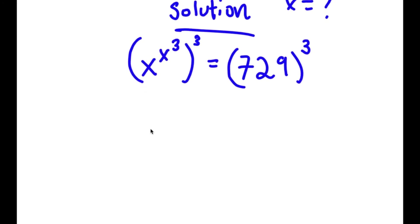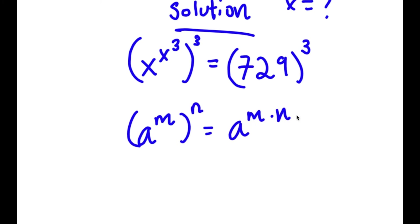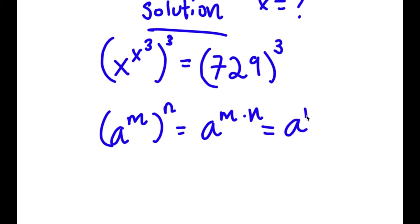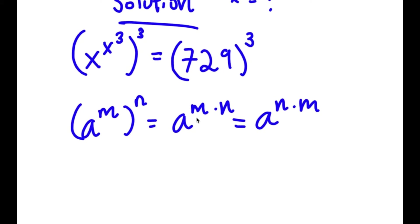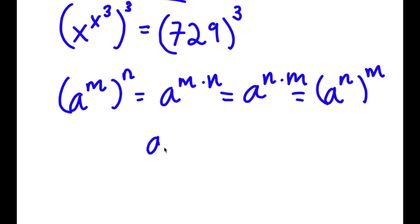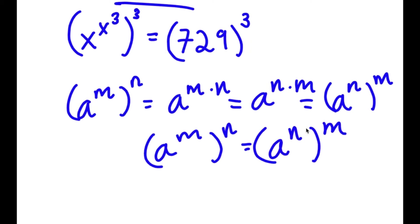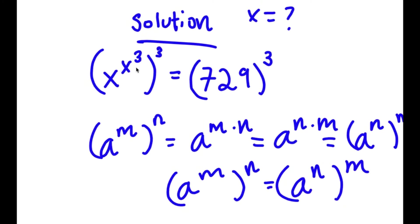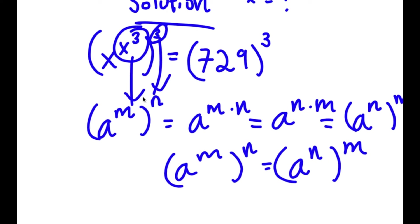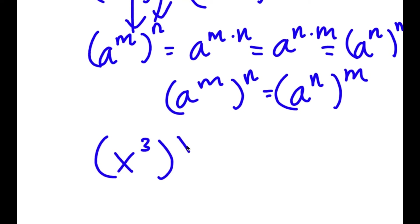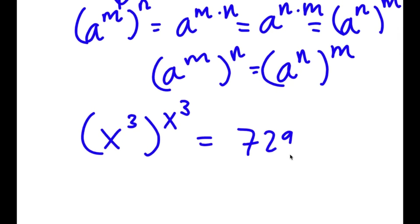If I have something in the form a to the power of m to the power of n, this equals a to the power of m times n. And since multiplication is commutative, a to the power of m to the power of n equals a to the power of n to the power of m. So over here, x to the power of x to the power of 3 to the power of 3 — thinking of x to the power of 3 as m and 3 as n — becomes x to the power of 3 to the power of x to the power of 3.